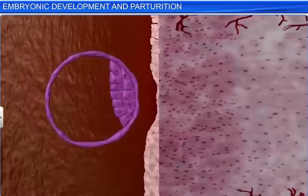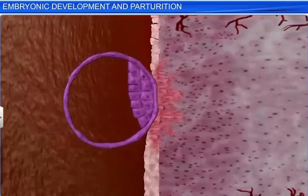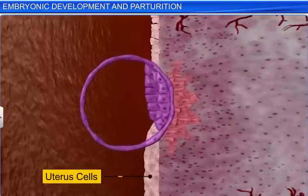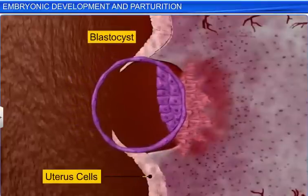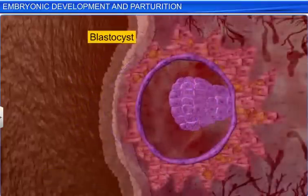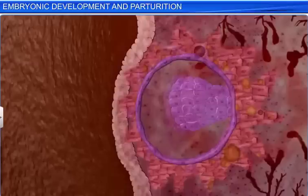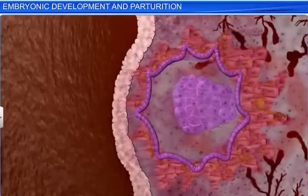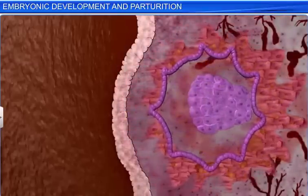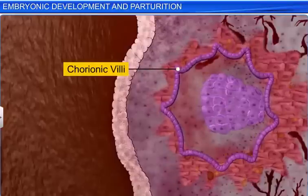After implantation, the trophoblast grows further, which causes the blastocyst to sink in and get covered by the cells of the uterus. As the blastocyst sinks further into the uterus, finger-like projections called chorionic villi start appearing on the trophoblast.